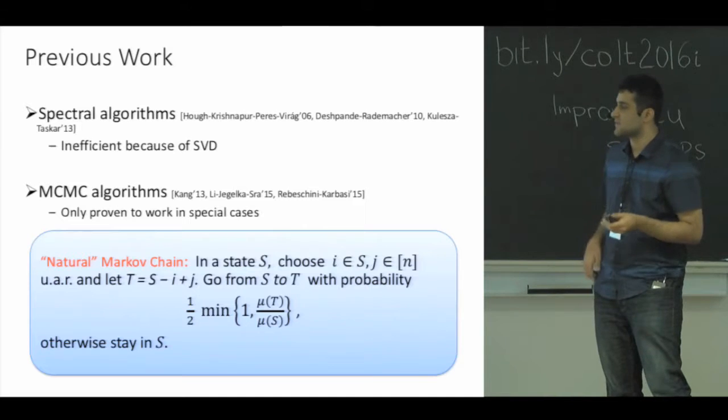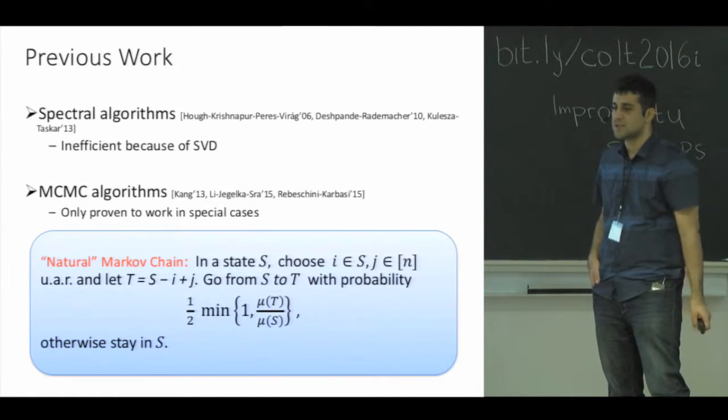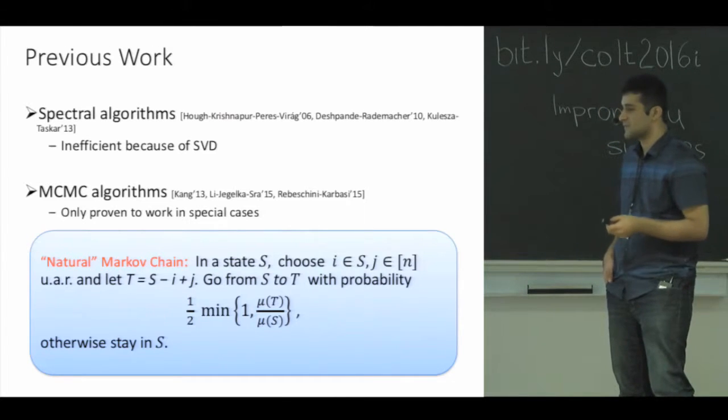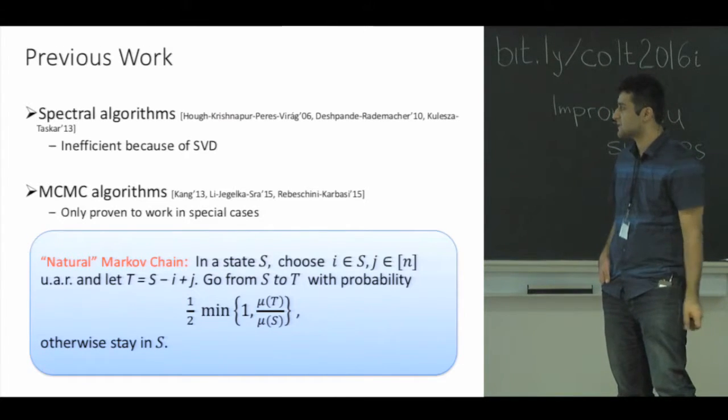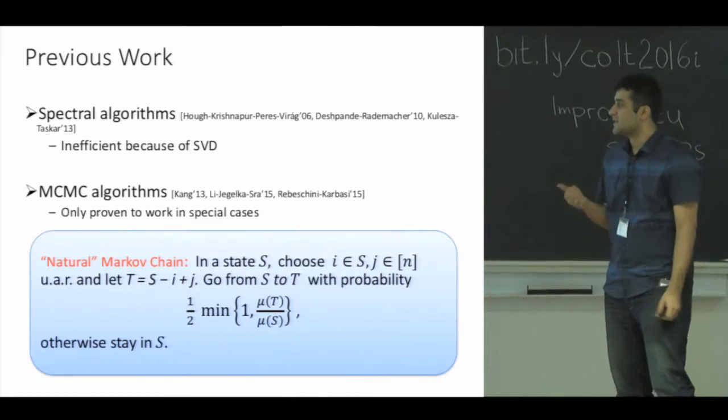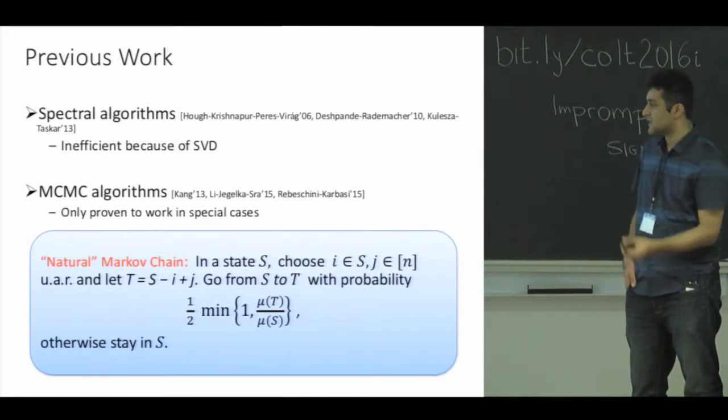Let me define the chain. The state space of the chain consists of subsets of size k in the support. In a state S, what you do is choose one element from S and one element from the ground set uniformly at random, and you switch them to get a new subset T.